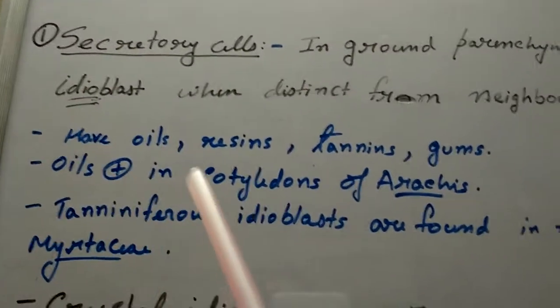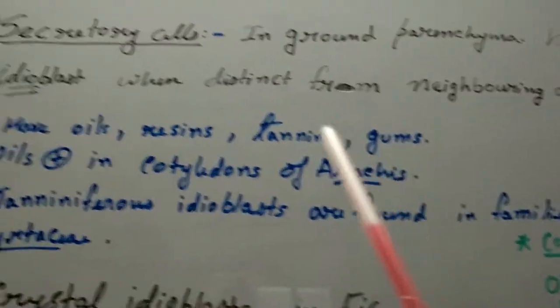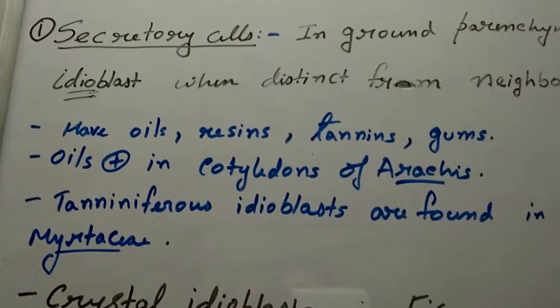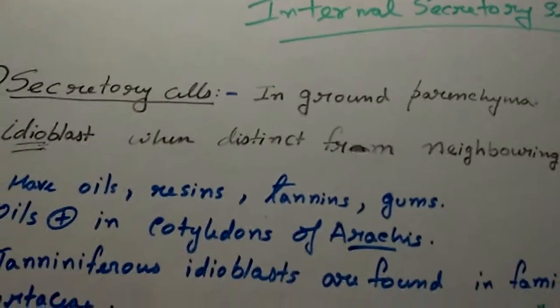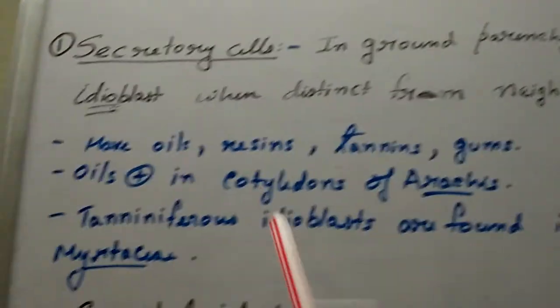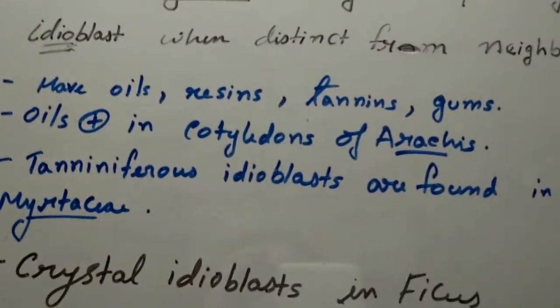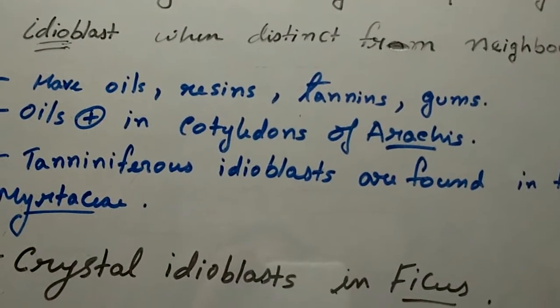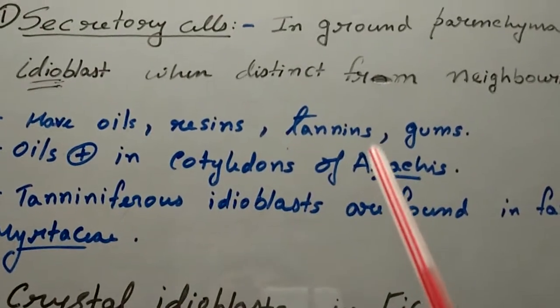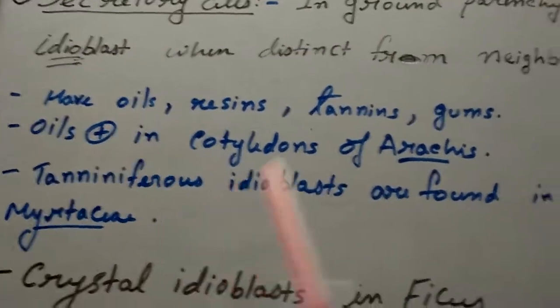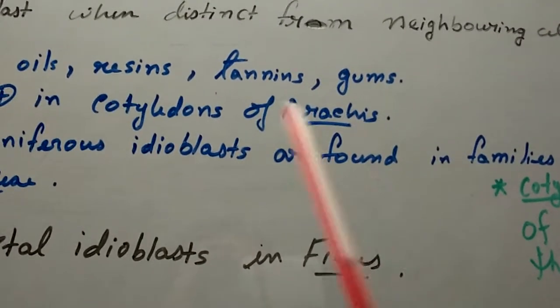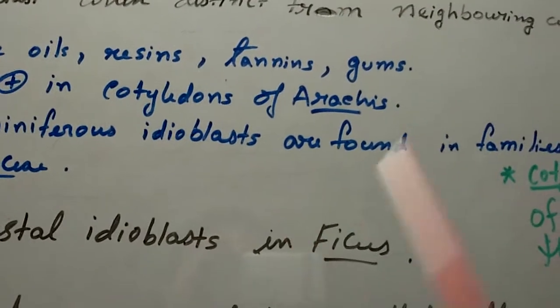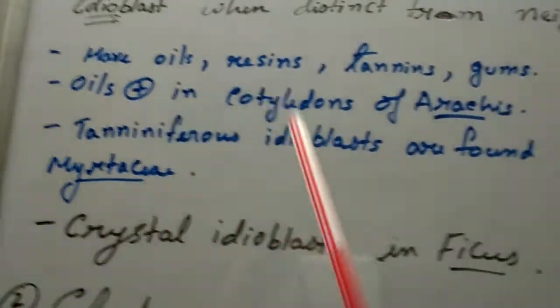Secretory cells contain oils, resins, tannins, and gums. These are some derivatives of secretory cells. These are internal secretory cells and common examples are oils, resins, tannins, and gums. Oils are present in the cotyledons of Arachis — Arachis is the scientific name for groundnut.